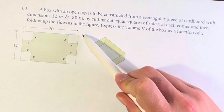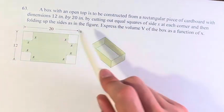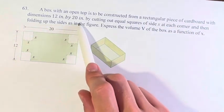12 by 20 inches, by cutting out equal squares of side x at each corner and then folding up the sides as in the figure.